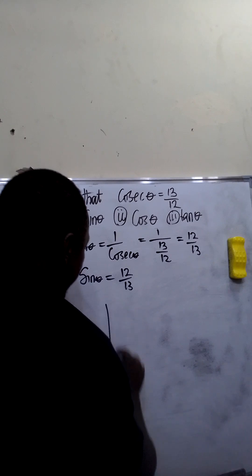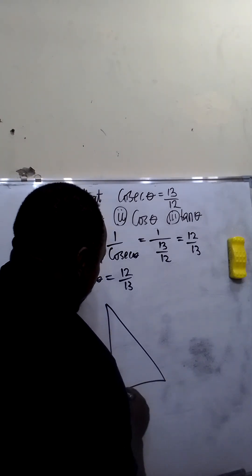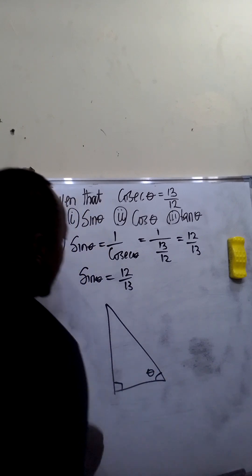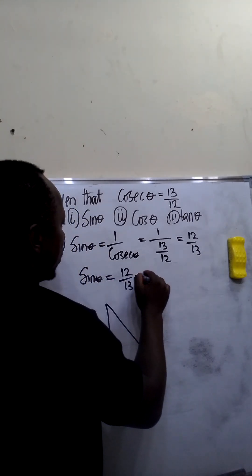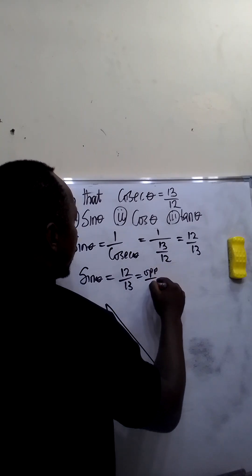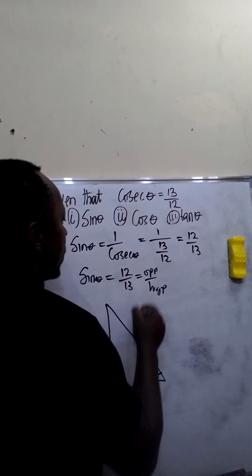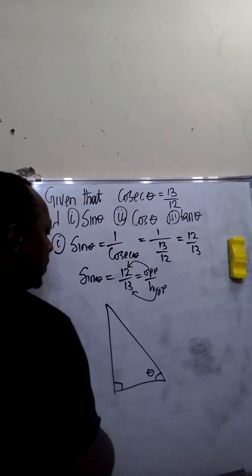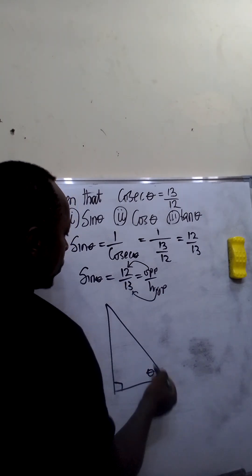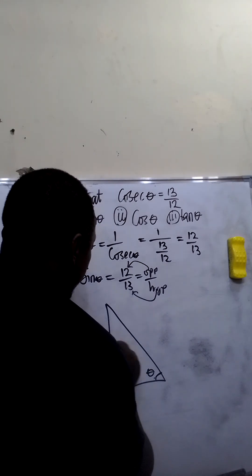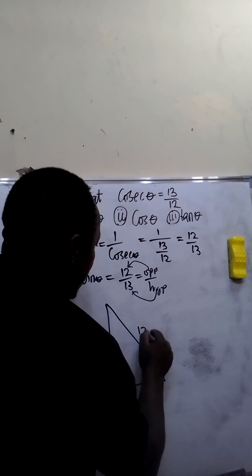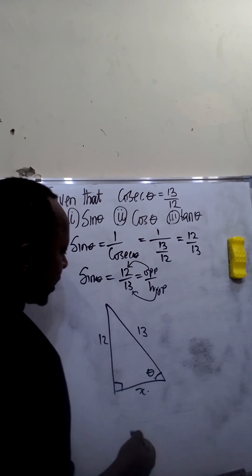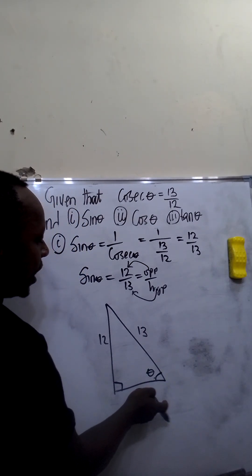For example, if we have a right-angle triangle, here is 90 degrees. Let's call this angle theta. Sin theta is equal to opposite over hypotenuse. Our opposite is 12, while our hypotenuse is 13. Considering this angle, our opposite is 12 and our hypotenuse is 13. Our adjacent is not given — let's call it x.